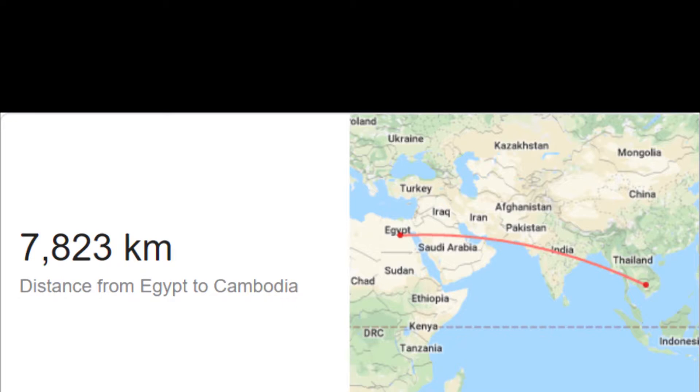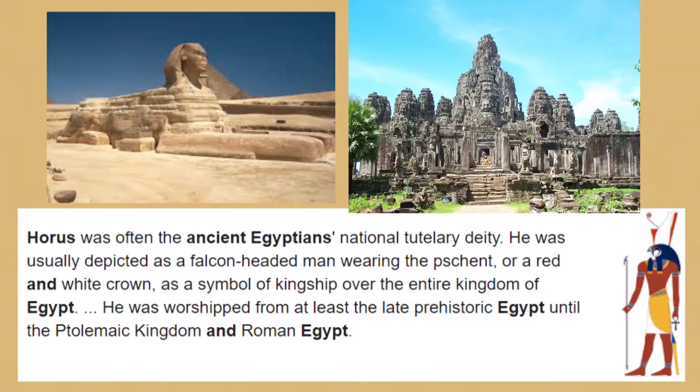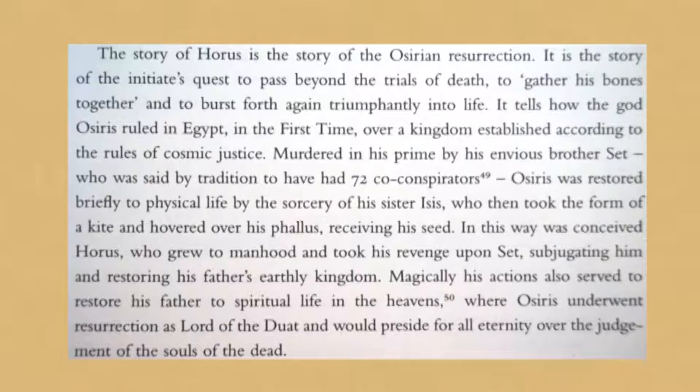The first connection we can make is through Horus. The myth of Horus can be applied to Egypt and Cambodia. In ancient Egypt, Osiris was a king and his brother Set desired his throne. Set murdered Osiris to become the new king and cut his body up into little pieces. Osiris's wife used magic to impregnate herself and gave birth to Horus, who then went on to defeat his uncle Set and restore order to the land.